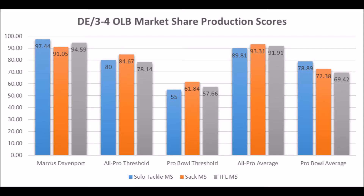Getting to Marcus Davenport's production data — if you've already seen my previous video on this, you can fast forward a bit. Davenport had a 97.44 solo tackle score, 91.05 sack score, and 94.59 TFL score. Based on production, Marcus Davenport was fantastic. It is important to note that a lot of his production was against fairly weaker competition — he played at UTSA and didn't really play in the SEC. But it's still a good profile; you do want a guy to be productive wherever he plays.